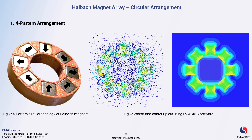The contour plot further illustrates how the magnetic field intensity varies across the array. The benefit of this design is that it provides a strong, focused magnetic field where it's needed, making it particularly effective for applications such as magnetic bearings or motors where precise magnetic control is essential. By reducing the magnetic field on the opposite side, we also minimize interference with surrounding components, enhancing overall system performance.